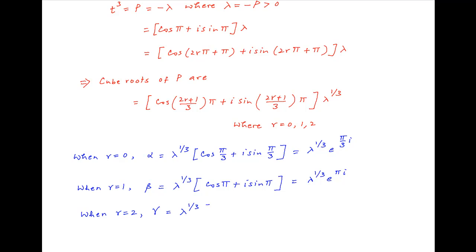Similarly, putting r = 2, the third cube root γ is equal to λ^(1/3) · (cos(5π/3) + i sin(5π/3)), which is equal to λ^(1/3) · e^(5πi/3).